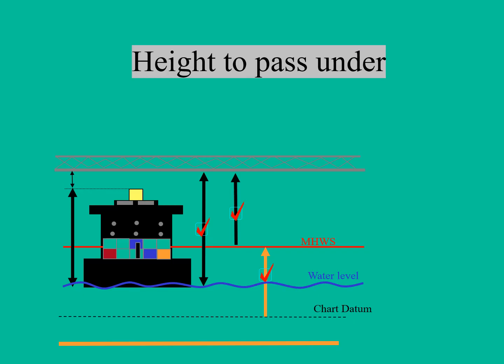The time of transit is also important — whether it is mean high water springs, mean low water springs, mean high water neaps, or low water neaps. Depending on the time of transit, you apply the appropriate height of tide and do the calculations. If the height is not sufficient, you may advise the pilot or port authorities that it is not safe for the vessel to pass at that time. If it is safe, you inform the pilot and take the vessel forward.